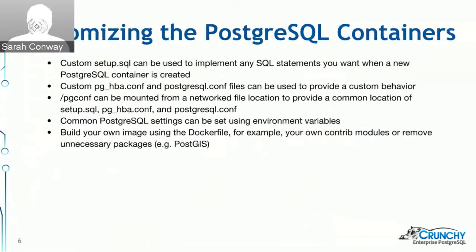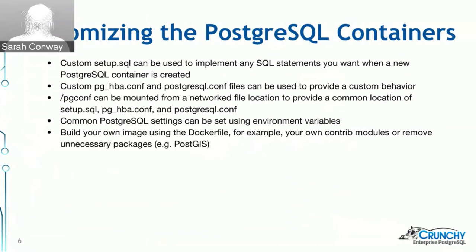A major design goal is to ensure users can fully customize their version of the project. For instance, the setup.sql file is mounted outside the container so users can modify it and implement custom SQL statements for newly created containers. The pg_hba and postgres configuration files are other examples of files you'll commonly want to access. You can either use the default files generated by Postgres upon container creation, or mount them externally in the persistent volume claim to configure them to fit your requirements.